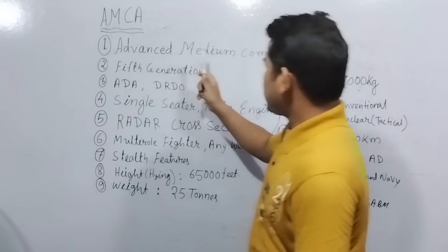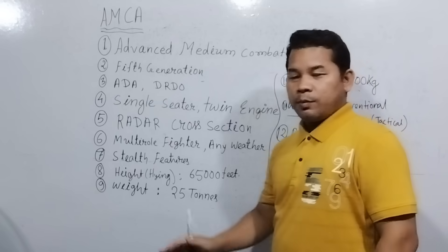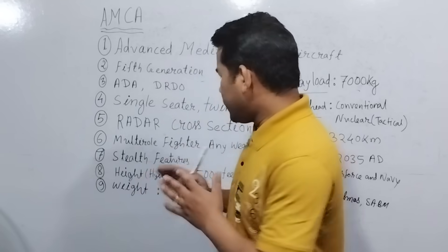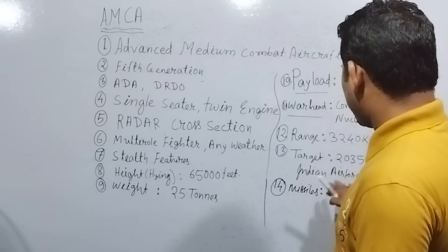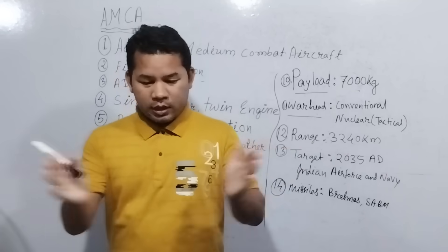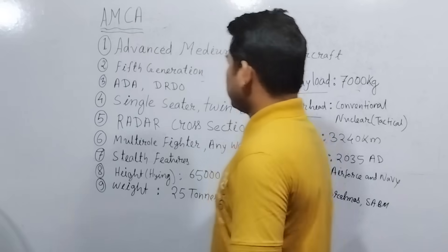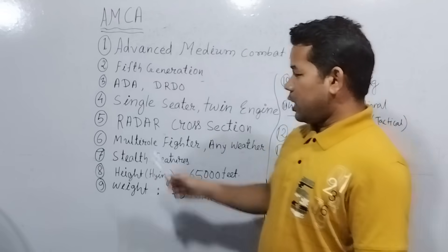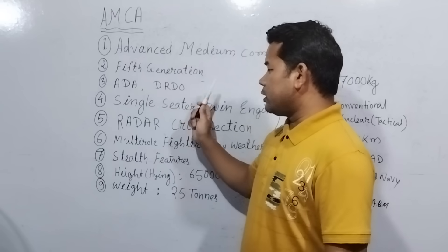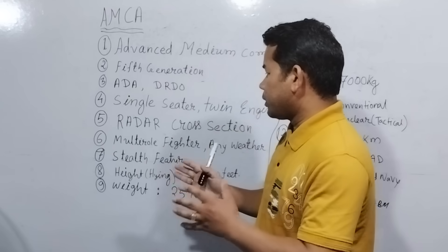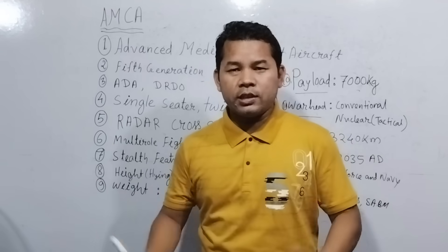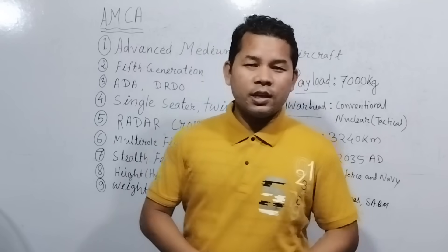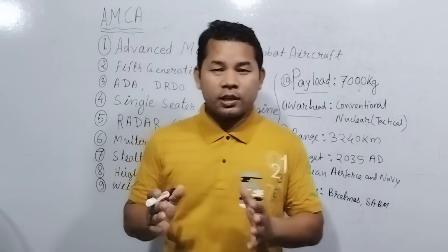AMCA — Advanced Medium Combat Aircraft — is India's 5th Generation Fighter Aircraft. It is intended for both the Indian Air Force and Indian Navy. The aircraft is powered by DRDO-developed systems, and the software will be powered by artificial intelligence equipment in order to operate at advanced airpower levels.